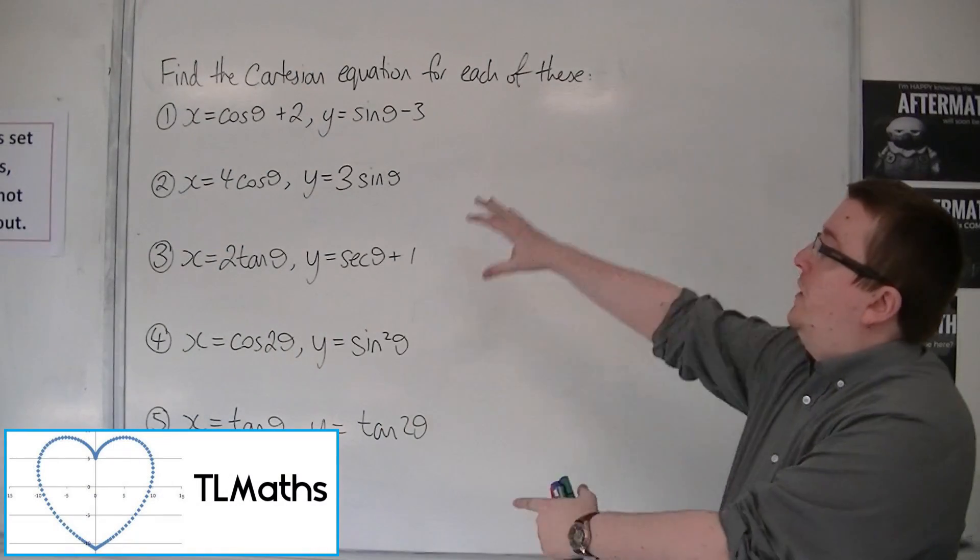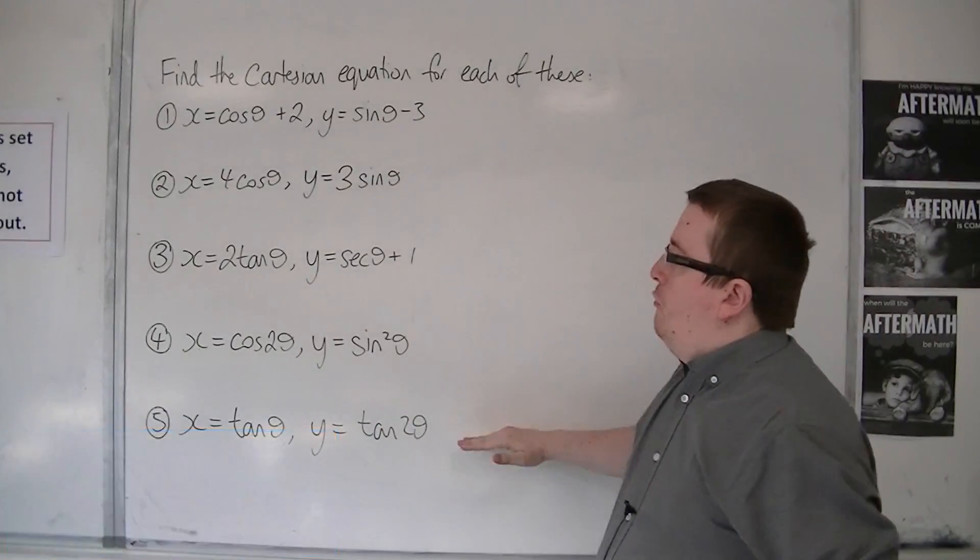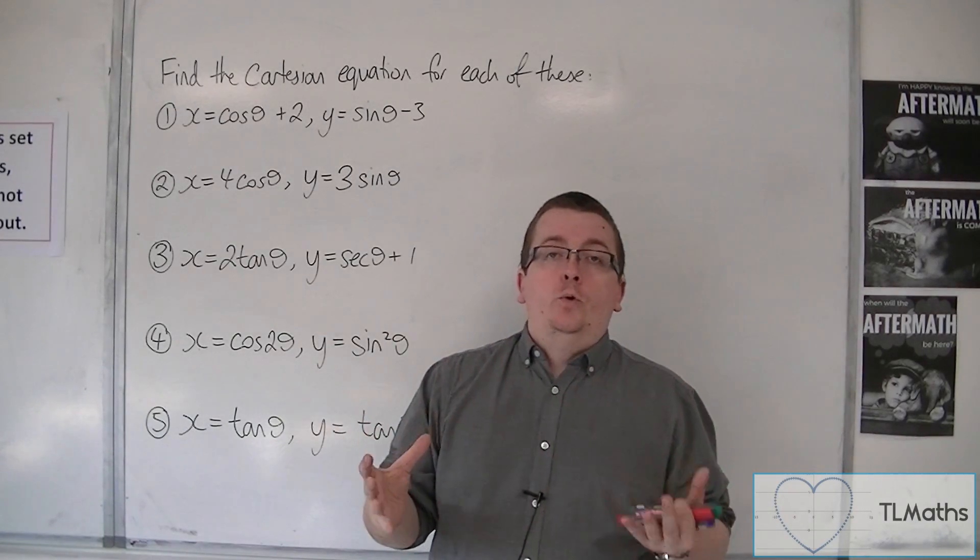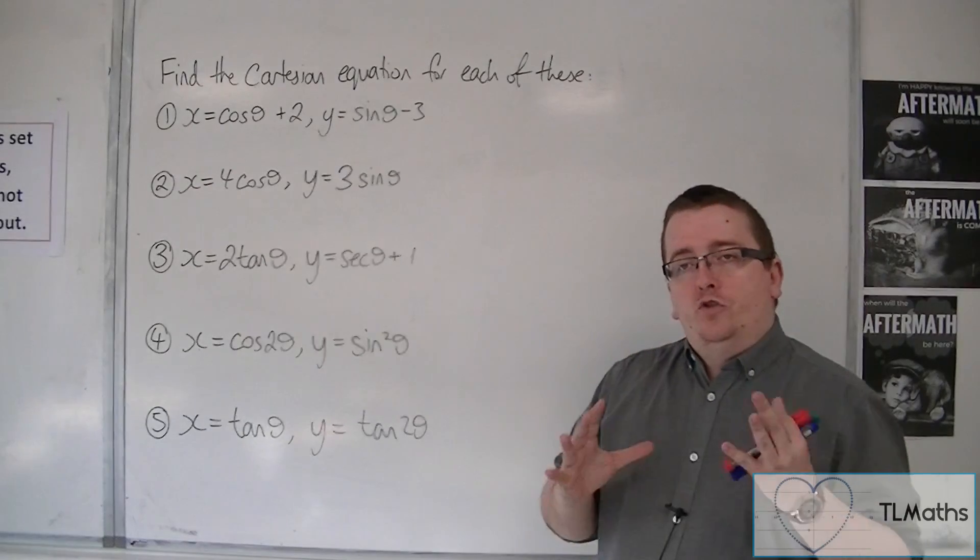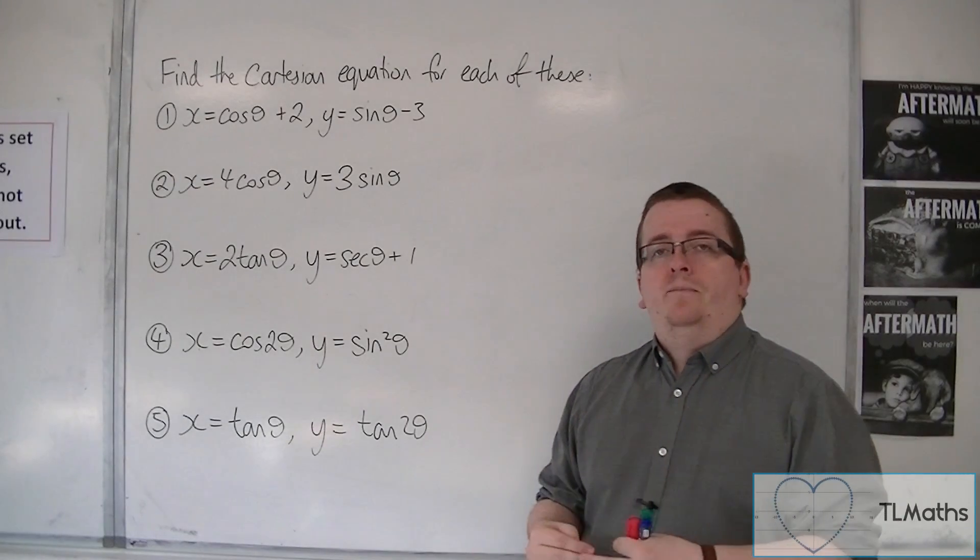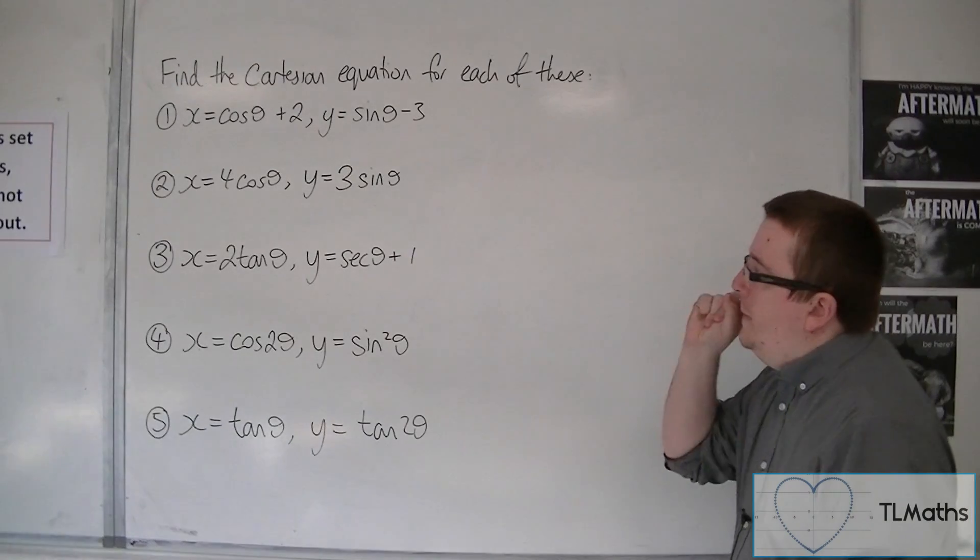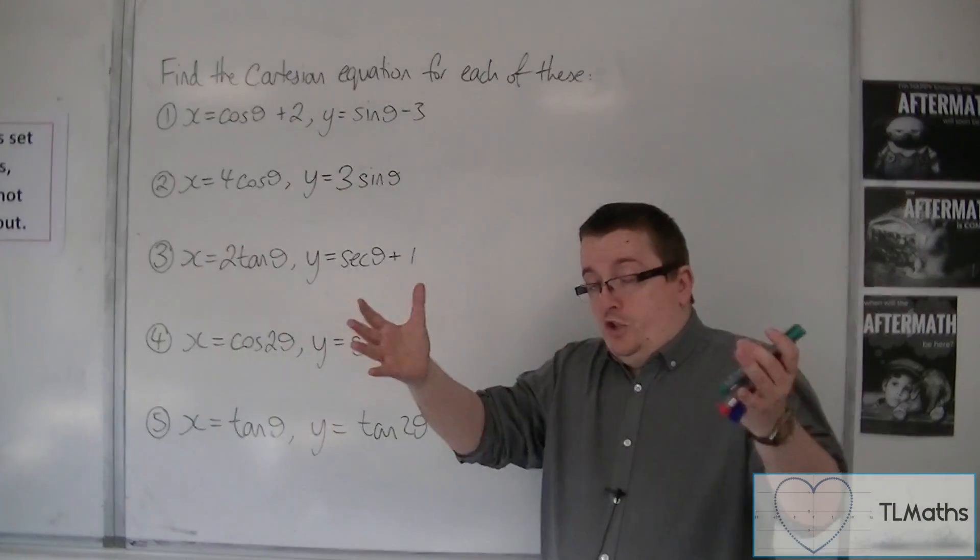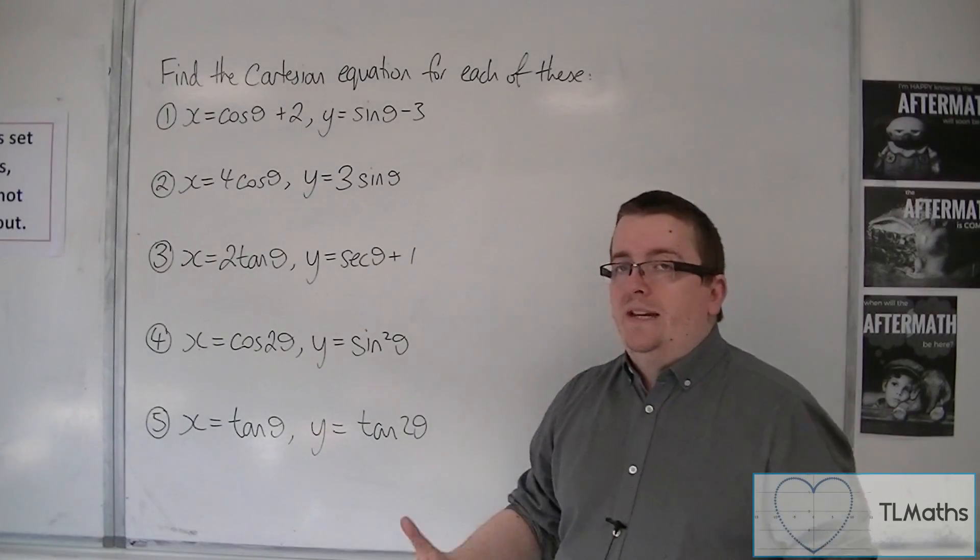In this video, we're going to be going from parametric equations to a Cartesian equation equivalent, and we're going to be using trigonometric identities to get there. So you need to really have your eye on the ball with this to be able to identify which trig identity you would need to use.